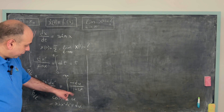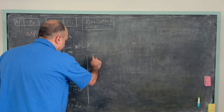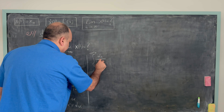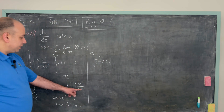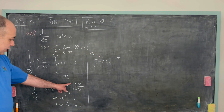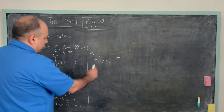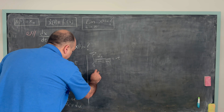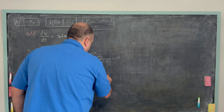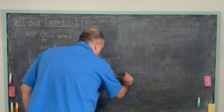Taking the minus sign to the other side gives the integral from 0 to cos x of du/[(1-u)(1+u)] = -t, since 1 - u² = (1-u)(1+u). Applying partial fraction decomposition, this equals (1/2)∫du/(1-u) + (1/2)∫du/(1+u), all equal to -t.